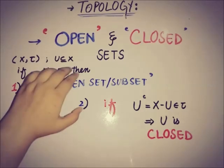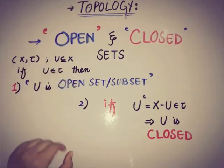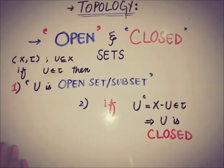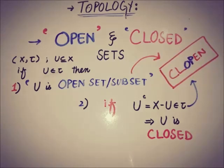If u, a subset of x, is such that its complement is also present in the topology, then u is closed. If u is open and closed at the same time, it is known as a clopen set. In general, in any set x, the set itself and the empty set are clopen.